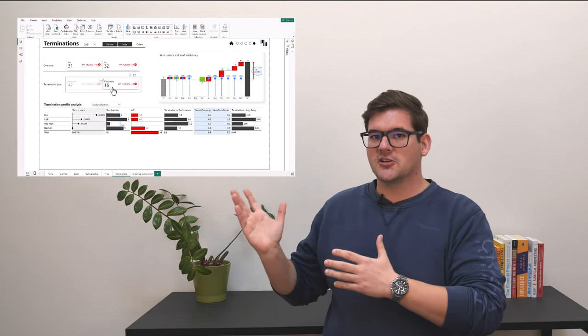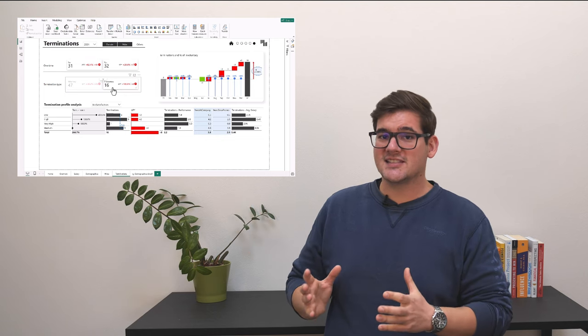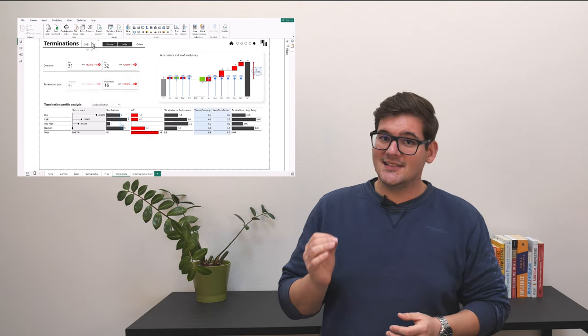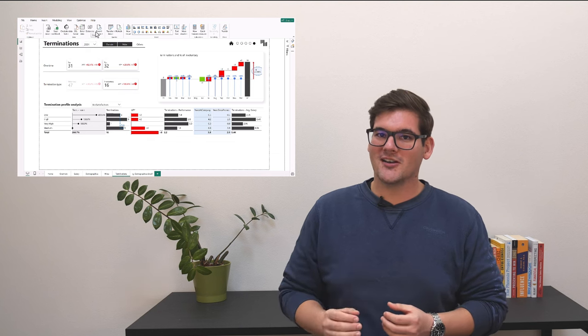And just looking at terminations now, we can understand exactly where our problems lie. And this, this is the main part of actionable reporting. Looking at the report, gaining the knowledge of are we doing good or bad, and where we have to work or put some action in to be better.